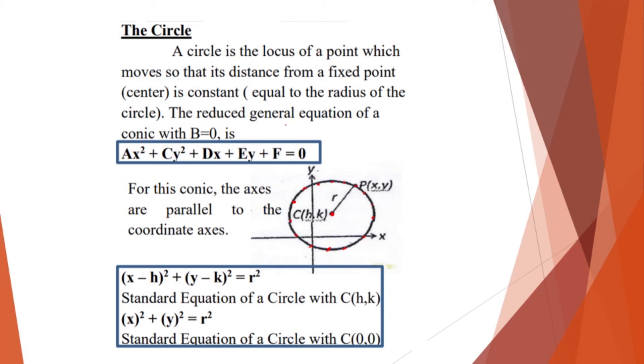So the reduced general equation of a conic with b is equal to 0 is this. So therefore, this is the general equation of a circle. So where in that is equal to ax squared plus cy squared plus dx plus ey plus f is equal to 0. So for this conic, the axis of r parallel to the coordinate axis.